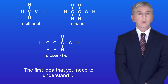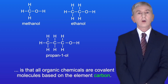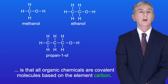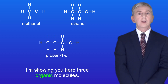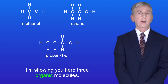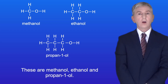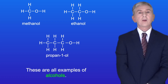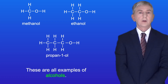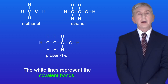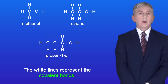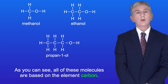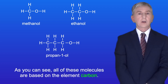The first idea you need to understand is that all organic chemicals are covalent molecules based on the element carbon. I'm showing you here three organic molecules. These are methanol, ethanol and propan-1-ol, and these are all examples of alcohols. The white lines represent the covalent bonds. As you can see, all of these molecules are based on the element carbon.